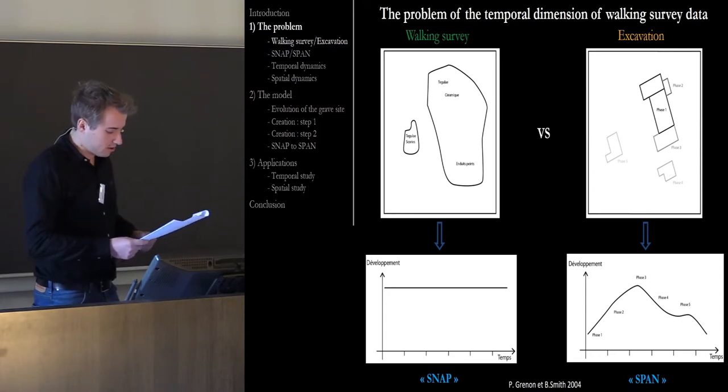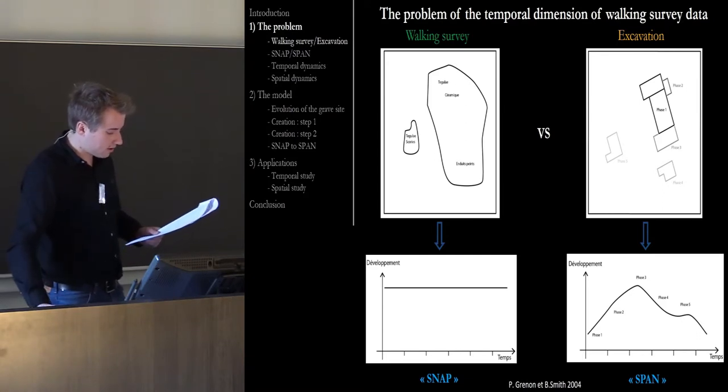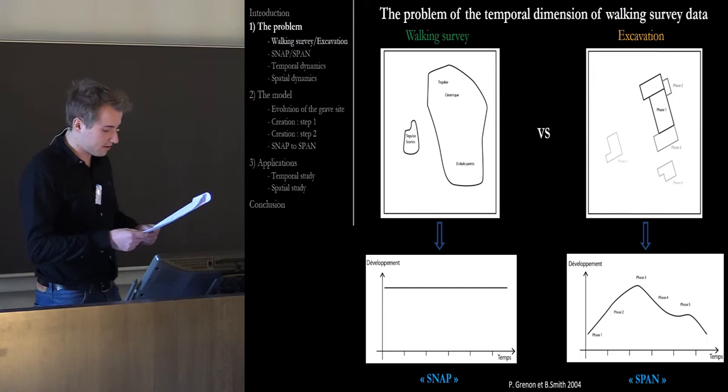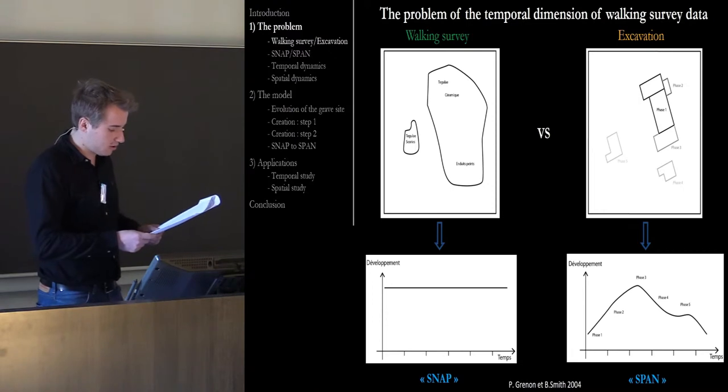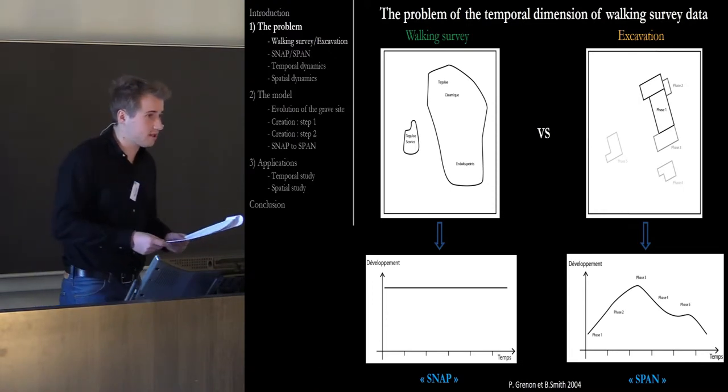The walking survey only permits collection of the present evidence on the ground. Building materials and artifacts from various states of the explored site are mixed. The stratigraphic information which enables the restoration of the evolution of a site is thus absent unlike information from an excavation.